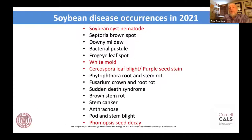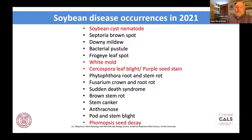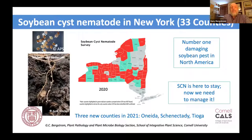We didn't see tremendous disease severity in New York State on soybean this year, but a lot of the usual players showed up. In particular, we'll talk about the expansion in range of soybean cyst nematode. White mold was highlighted but was not as severe as we thought. We saw quite widely distributed Cercospora leaf blight — the same fungal organism that causes purple seed stain — and unfortunately quite a bit of that in seed lots this year, along with fair evidence of Phomopsis seed decay.